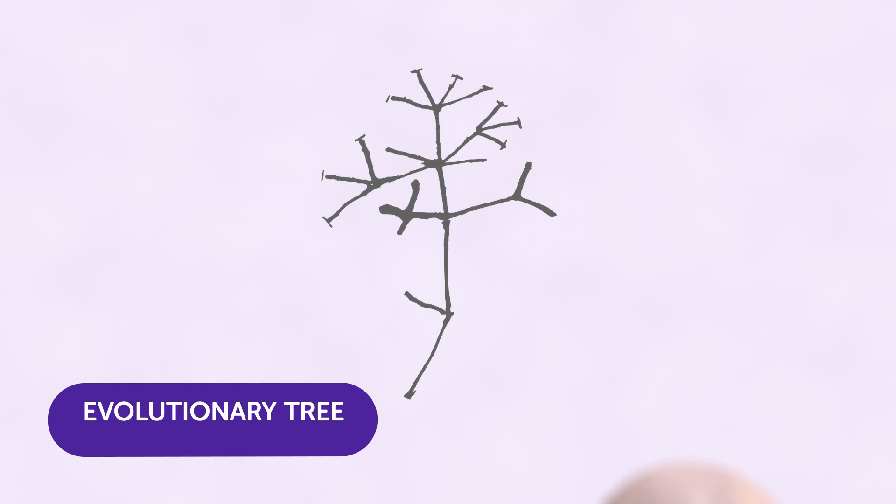More than 150 years ago, Charles Darwin first drew evolution like a tree, predicting that different species branch off from their ancestors.